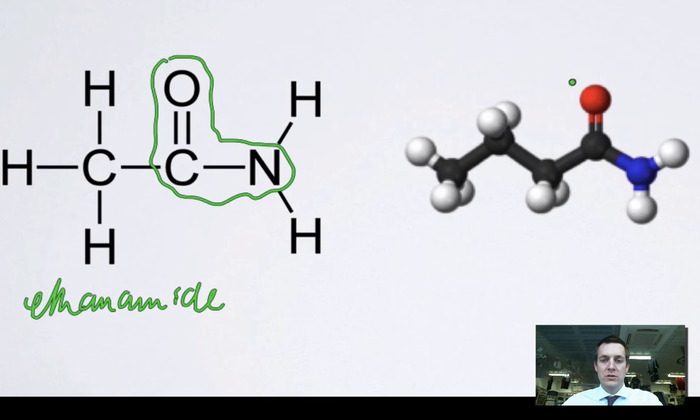This amide here, which, again, has this amide functional group, and, again, it's a primary amide because there's no carbons attached here, just hydrogens. This one here has four carbons, so this one would be called butanamide.